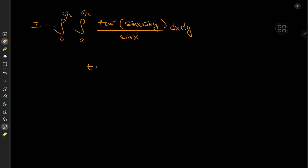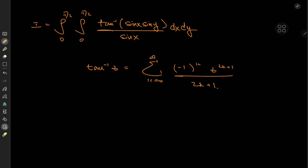I'm going to start off with the series expansion for arctangent z, which we know equals the sum over k from 0 to infinity of negative 1 to the k times z to the 2k plus 1 over 2k plus 1.